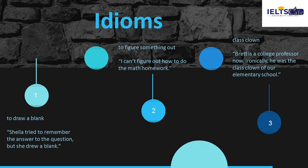The last idiom is 'class clown,' and its meaning is a disruptive student who often makes jokes instead of paying attention and doing their work. For example: Brett is the college professor now, and luckily he was the class clown of our elementary school. You can link this word to the class clown of your own batchmates to help you remember it.